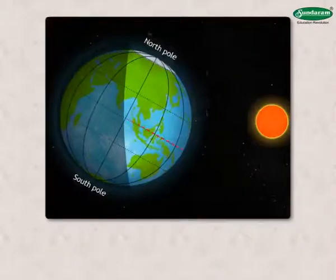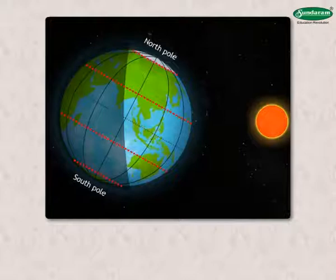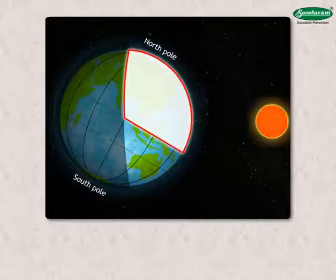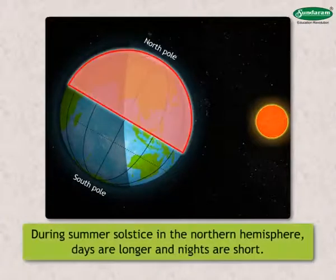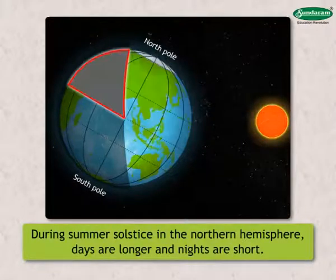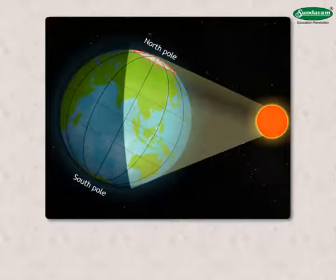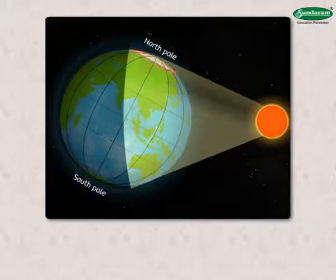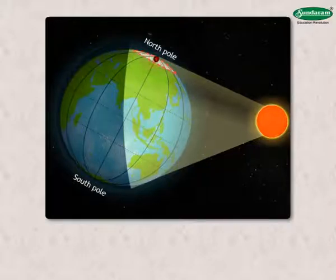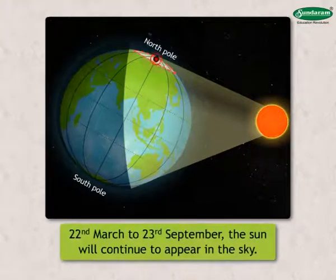It is the longest day in the northern hemisphere and the longest night in the southern. Two paths are created by the circle of illumination. Excepting those of the equator, the paths are not equal. In the northern hemisphere, the illuminated paths are greater than the dark paths, meaning days are longer and nights short. The entire arctic circle lies in the illuminated path, meaning that even after the earth completes a rotation, the sun will still be visible in the sky. The sun will remain visible for 24 hours or more in the region from the arctic circle to the north pole. At the north pole, the sun will continue to appear in the sky for a period of 6 months, from 22nd March to 23rd September.